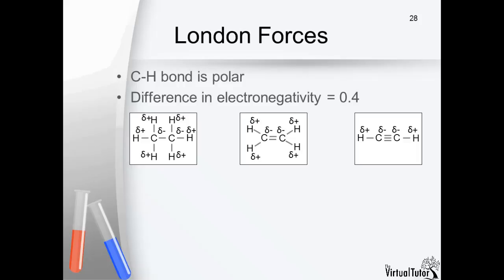The polarity of each of the carbon-hydrogen bonds in the molecules is shown. The carbon atoms are slightly negative because they attract the shared electron pair and the hydrogen atoms are slightly positive.